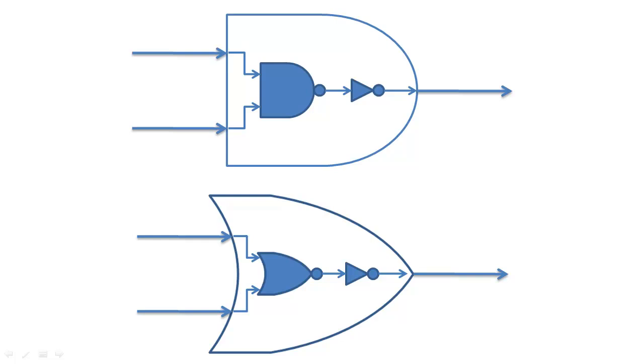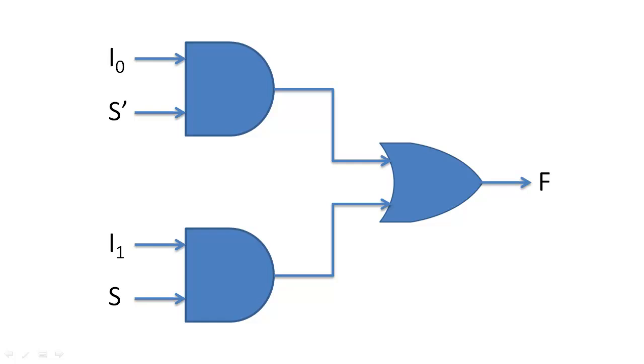So our minimal AND-OR circuit, which appears to be made of three gates, is actually made of six gates.